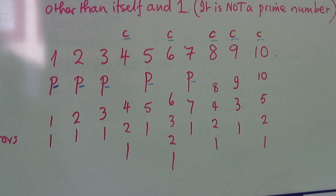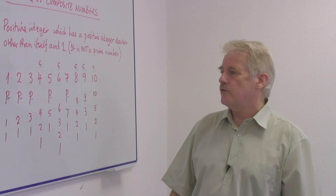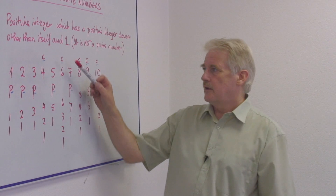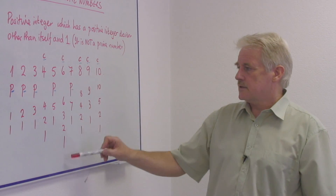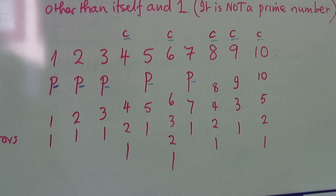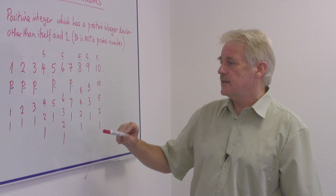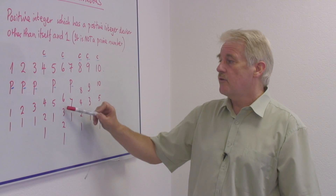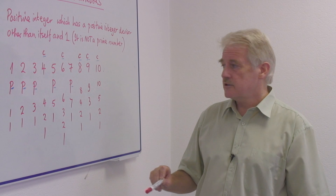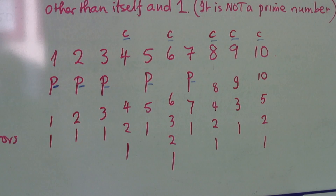Five has no other factors other than five and one, and therefore it is a prime number. Six: six and one are factors of six, but also two times three is six, so there are two other factors — therefore it is a composite number.